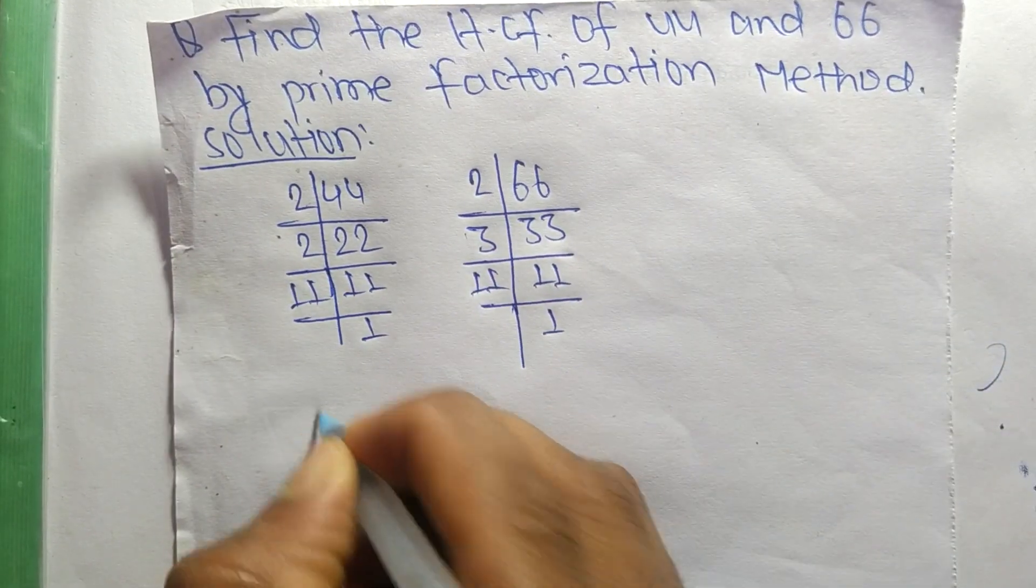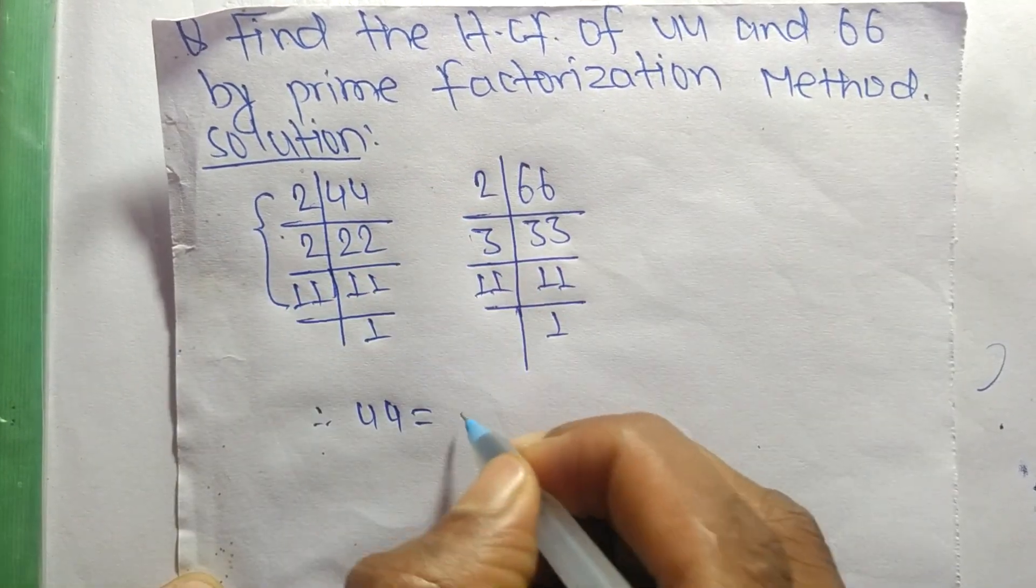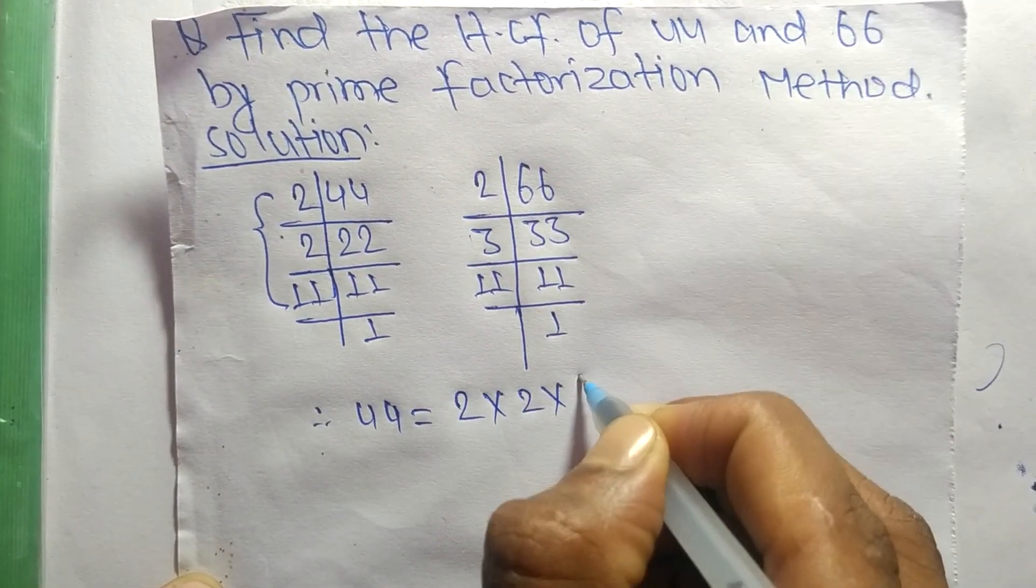So now, from these prime factors we can write: 44 equals 2 times 2 times 11.